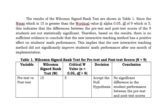The first column is for the variable being tested — we have here 'Pre-test vs. Post-test.' The second column shows the Wilcoxon Signed-Rank test W-value, which is 15. The third column shows the W-critical value at alpha 0.05 with degrees of freedom of 9, which equals 5. Our decision is to accept the null hypothesis, which states there is no significant difference in student performance between the pre-test and post-test scores.